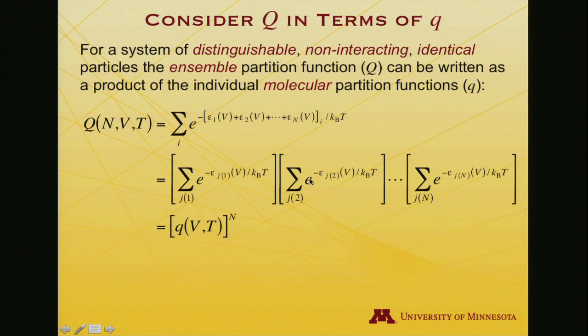So the ensemble function is sum over all accessible energy states, e to the minus the energy of that state. However, what are the accessible energy states? Well, the molecules don't interact with one another. So the total energy is just the sum of all their individual energies. So I've got that here. I've got the energy for molecule one, and I'm able to label them, molecule one. Molecule two, molecule three, out to molecule n divided by kT.